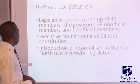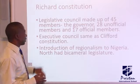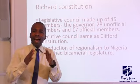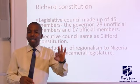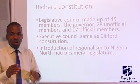The Richard Constitution also had a legislative council with 45 members — the governor inclusive — comprising 28 non-official members and 17 official members. It maintained the elective principle introduced by the Clifford Constitution: three members from Lagos and one from Calabar. The executive council under Richard Constitution was also the same as under Clifford.